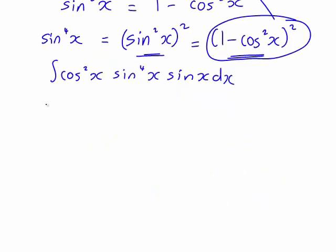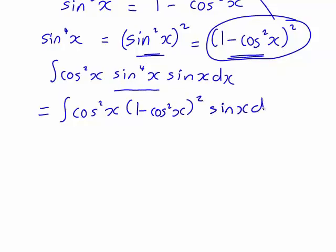Hence, our original integral, which I've rewritten here again, will become the integral of cos squared x times 1 minus cos squared x all squared, replacing that sine to the power of 4x, times sine x dx.